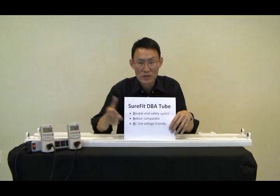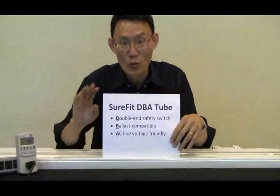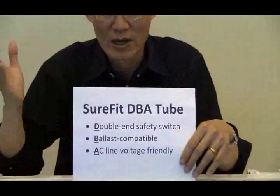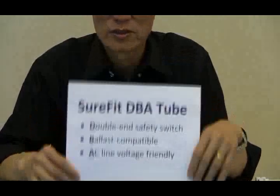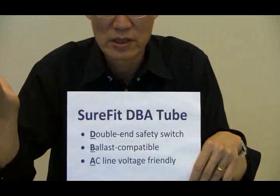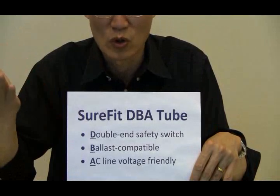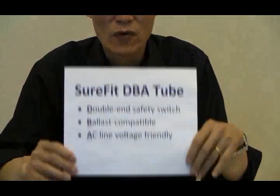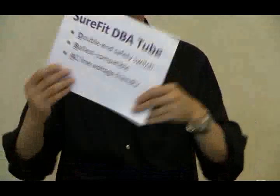What's your recommendation? Our recommendation? Use the DBA tube on line voltage. That is, without ballast. Without ballast, save more energy. Zero maintenance cost on ballast because there's no more ballast and free of arcing. Like that? Good. Me too.